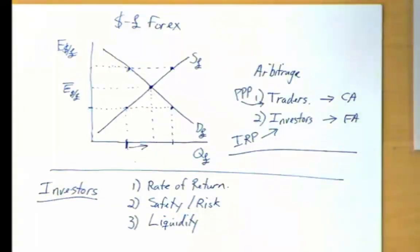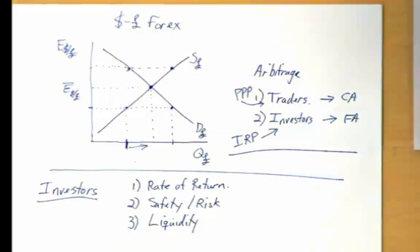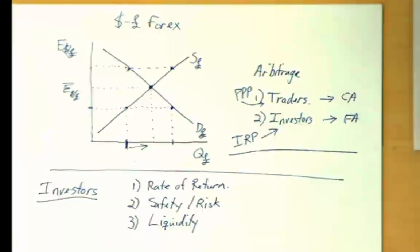We're going to start today by talking about the interest rate parity theory, focusing on the behavior and incentives of investors to invest in assets internationally. We talked last time about three different considerations investors may have in determining where to invest: the rate of return, the safety or riskiness of the assets, and the liquidity or ability to convert assets into a spendable form. We're going to focus our attention today on the first of these.